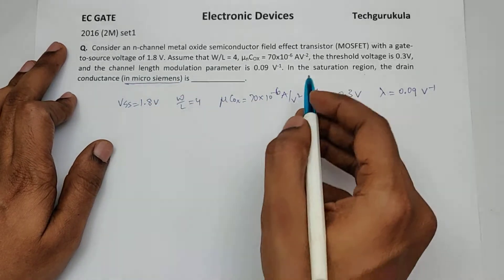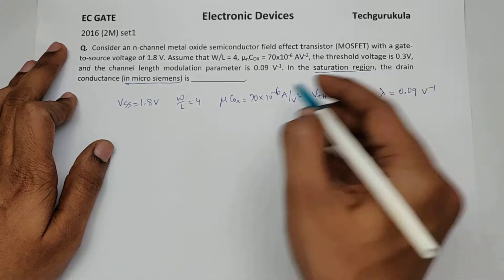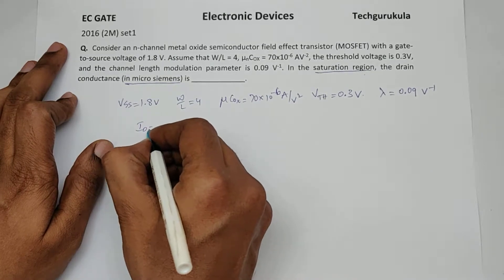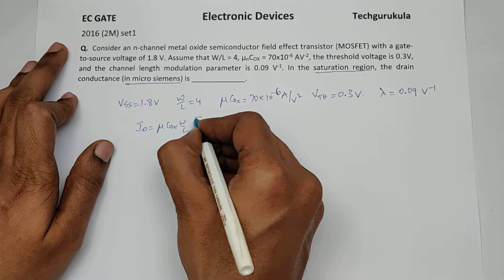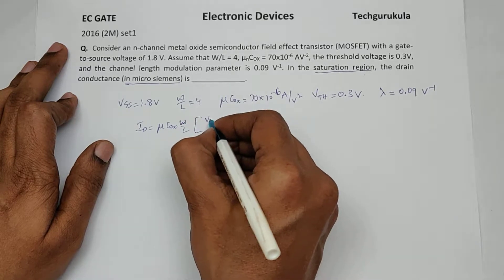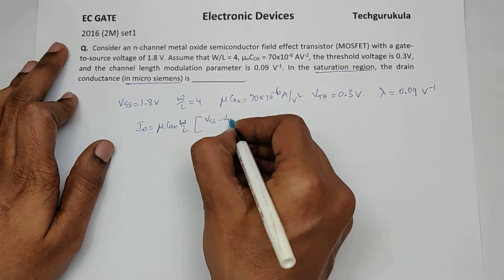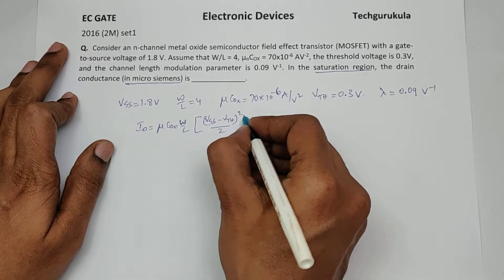So let's find what is in saturation region. We know the current is mu C ox W by L times VGS minus VTH whole square over 2.